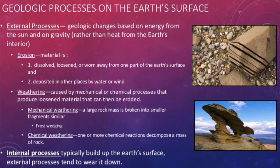There are external and internal processes that help shape the earth's surface. We have just learned about the internal processes and will now focus on the external. Internal processes are driven by the heat of the earth's interior, while external processes are driven by gravity and the sun's energy. These external processes include weathering and erosion.